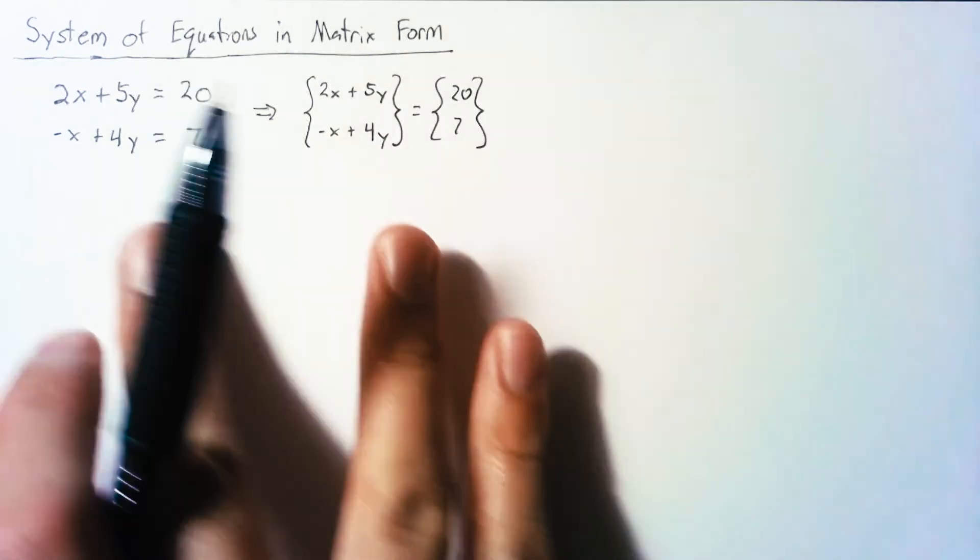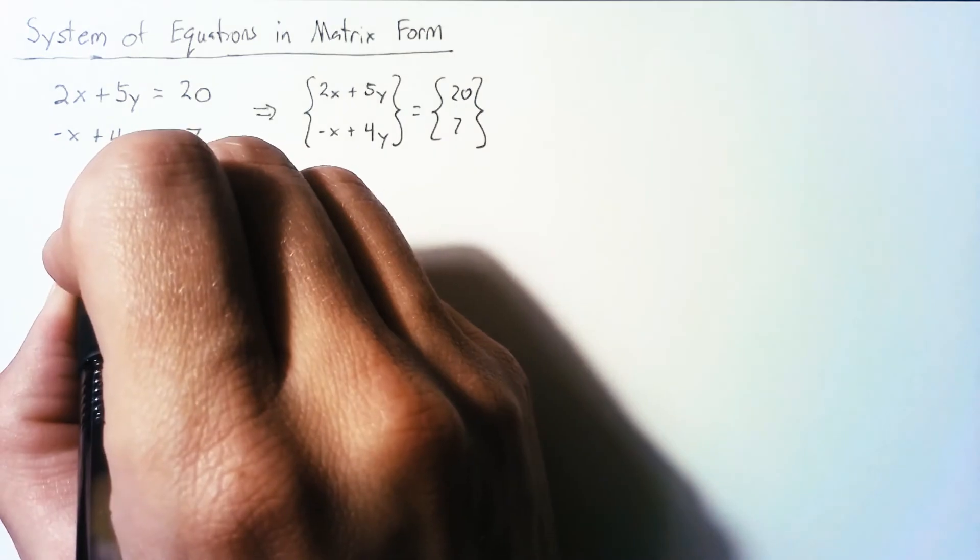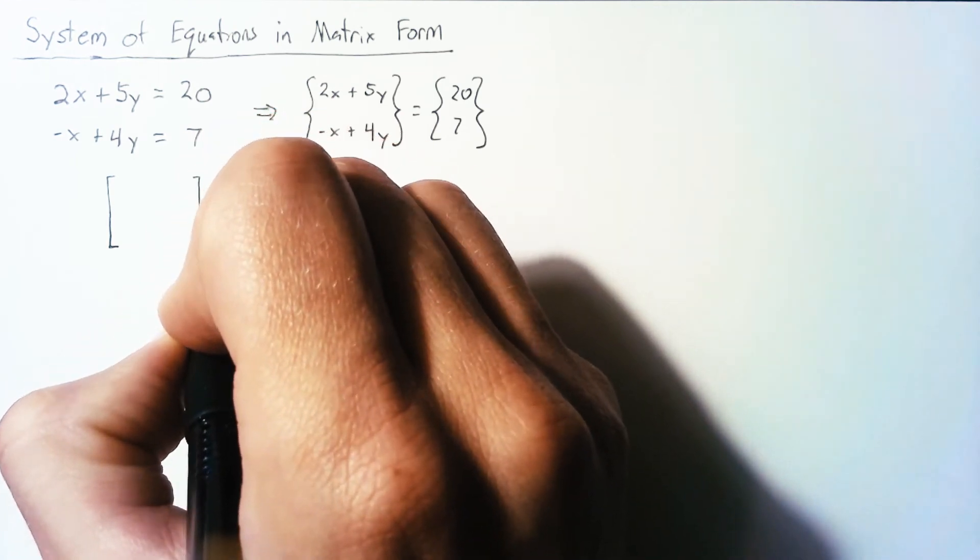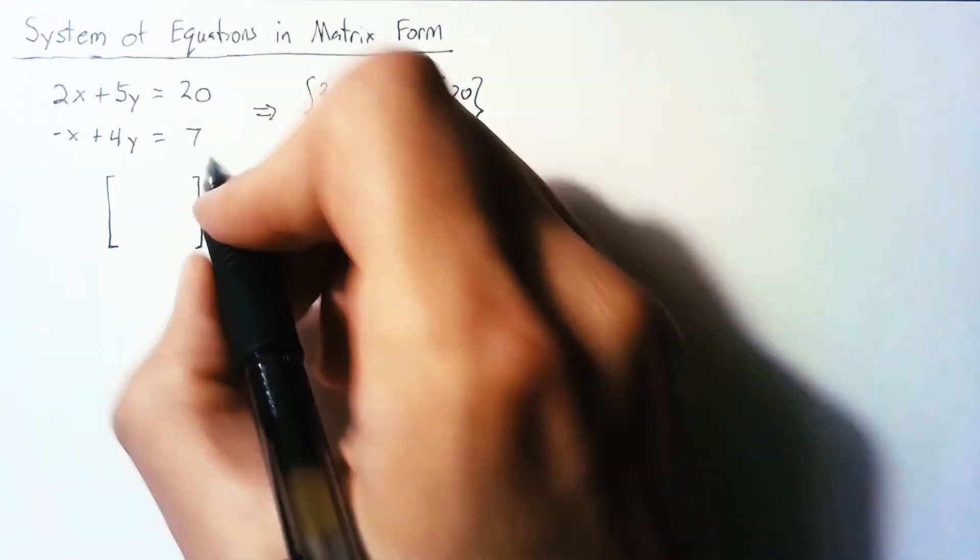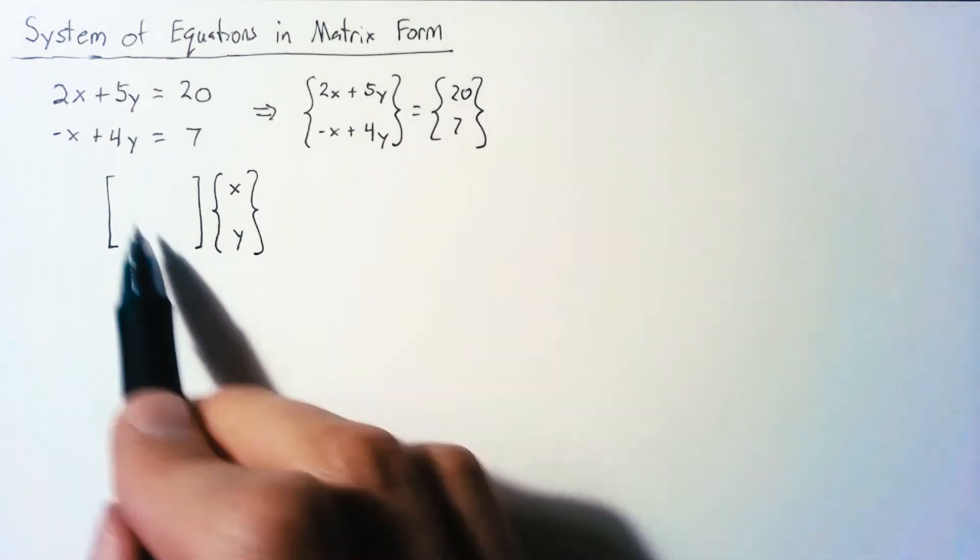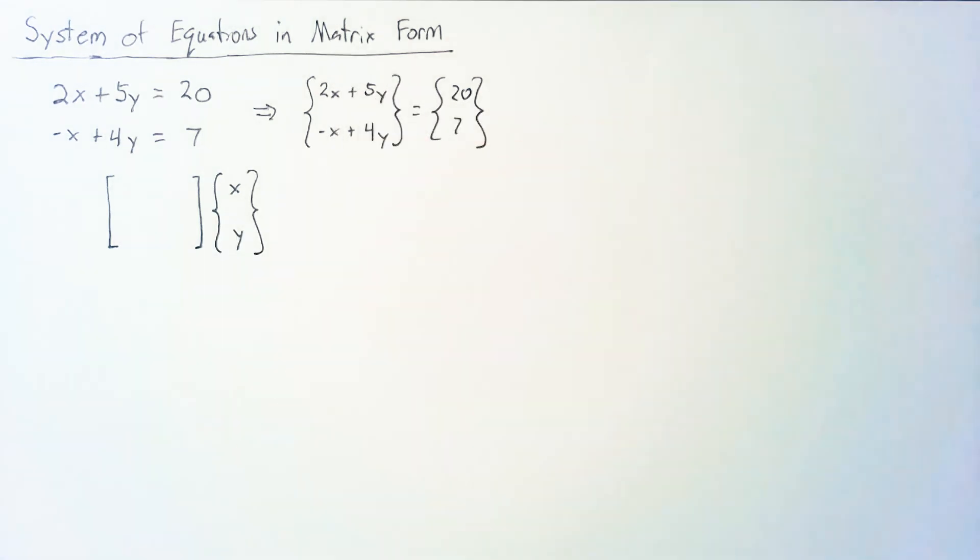Now, to move on from this, we need to remember some of the rules of matrix multiplication, because what we want is a matrix that is going to be multiplied by our unknowns. So our unknowns are x and y, and we want a matrix that we can multiply this by that will result in our values right here.